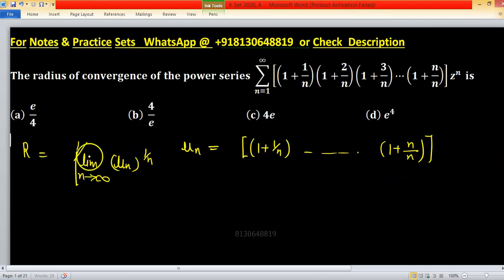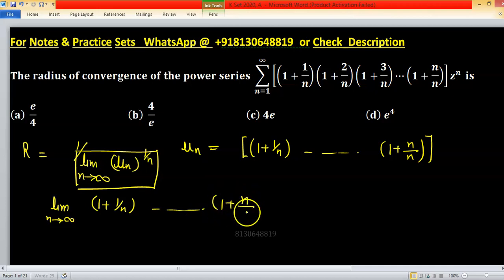So first we will find limit of u_n raise to the power 1 upon n. So limit n tending to infinity u_n is 1 plus 1 upon n and so on up to 1 plus n upon n raise to the power 1 upon n. Because these are in product and logarithm functions play an important role, sometimes typical types of product we can easily find out using logarithm function. So I take log both sides.